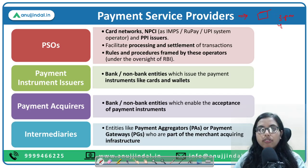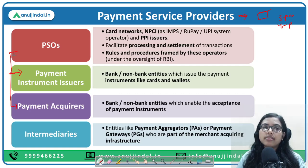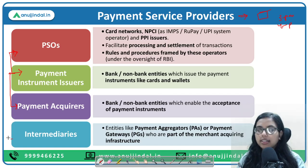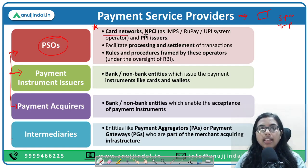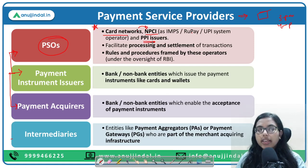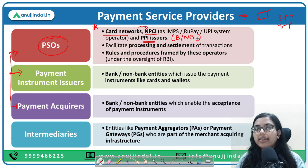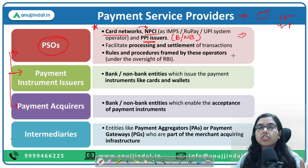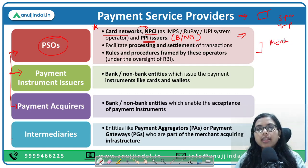Payment service providers can be a three-party system or a four-party system. In the three-party system we have: PSO (payment service operators), payment instrument issuers, and payment acquirers. In the four-party system, intermediaries are added. Payment service operators are the most important — these are our card networks. NPCI comes under card networks since RuPay is NPCI's card network.